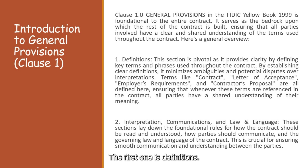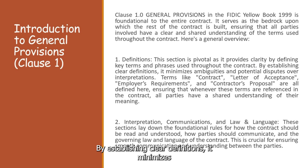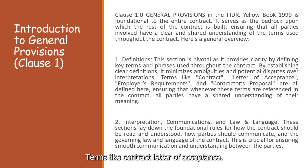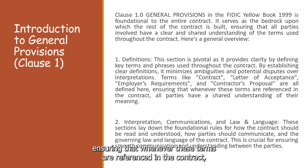The first sub-section is definitions. This section is pivotal as it provides clarity by defining key terms and phrases used throughout the contract. By establishing clear definitions, it minimizes ambiguities and potential disputes over interpretations. Terms like 'contract', 'letter of acceptance', 'employer's requirements', and 'contractor's proposal' are all defined here, ensuring that whenever these terms are referenced in the contract, all parties have a shared understanding of their meaning.